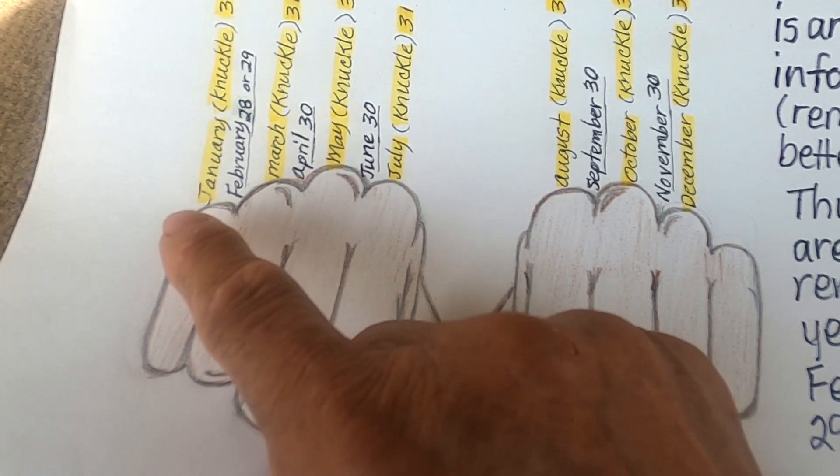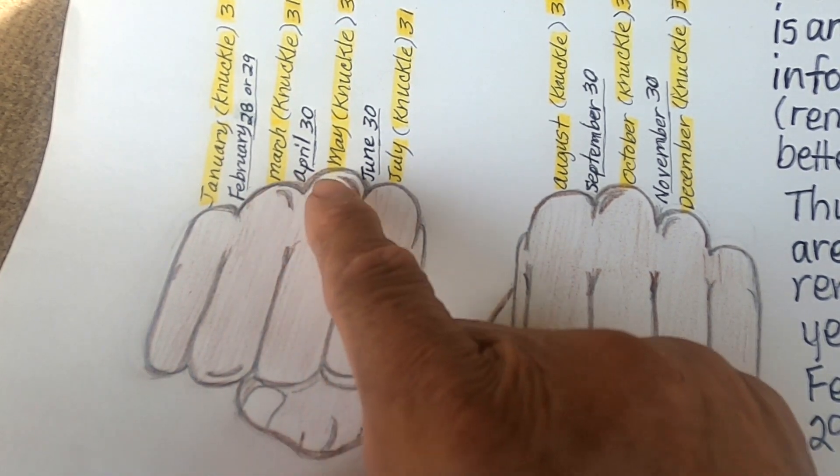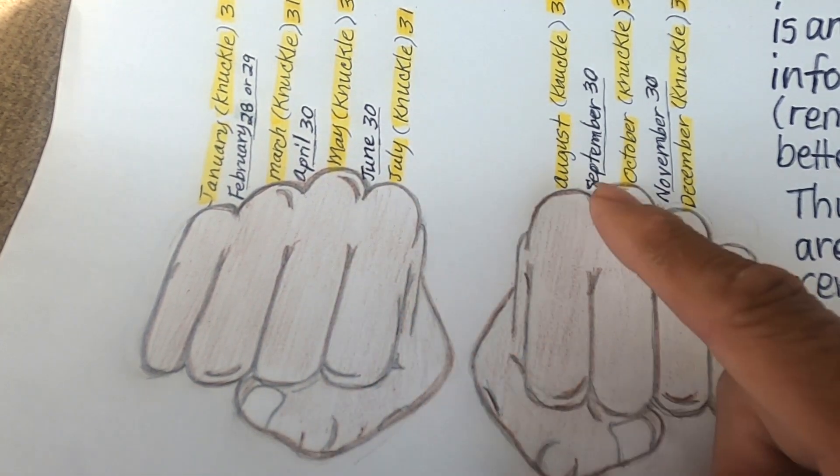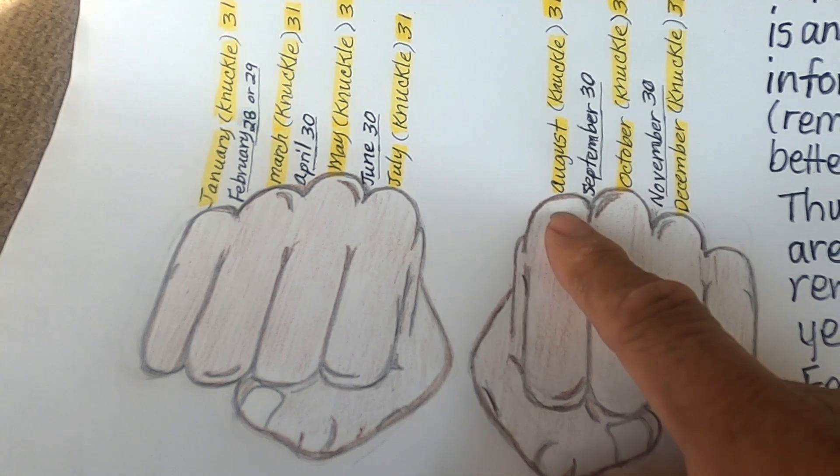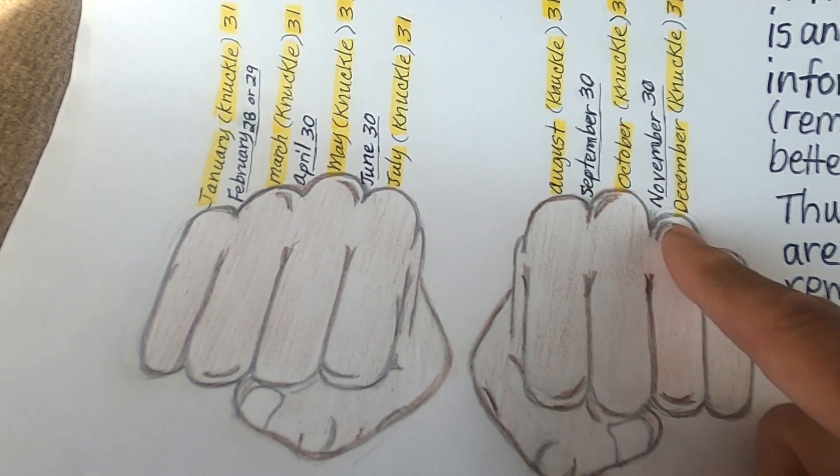That is going to be our subject today. Grandma's very excited! I'm outside behind the car where the wind is not blowing in my face. The knuckles will always be January, March, May, July, August, October, and December.